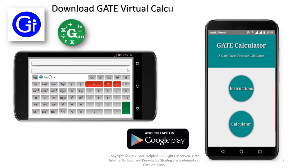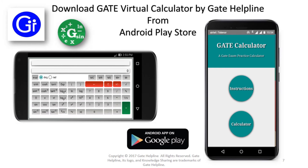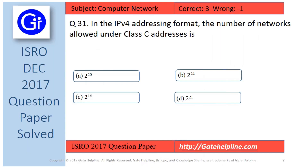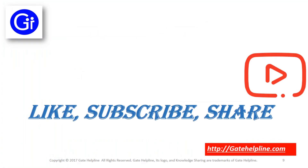Friends, for practicing, download the Gate virtual calculator by Gate Helpline from the Android Play Store. As per our discussion, the answer to this question is option D, that is 2 raised to the power of 21, which is the number of networks allowed under class C addresses.